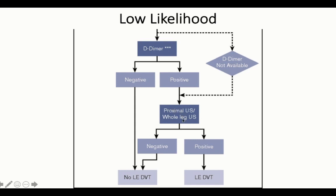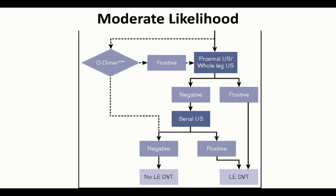These guidelines from the American Society of Hematology consider the proximal and whole-leg ultrasound techniques to be equivalent. If either is negative, there is no lower extremity DVT. If positive, you treat. The moderate-likelihood algorithm is essentially the same: do the proximal or whole-leg ultrasound. If negative, serial ultrasound may be undertaken. If the initial study is negative and the serial ultrasound is also negative, the patient does not have a DVT. If at any point the study is positive, that is definitive for DVT.